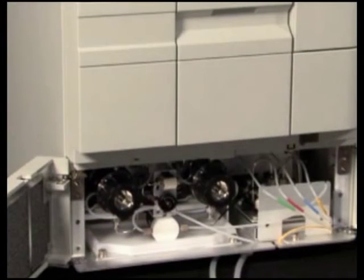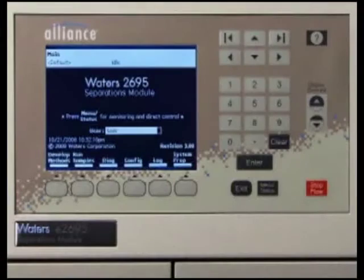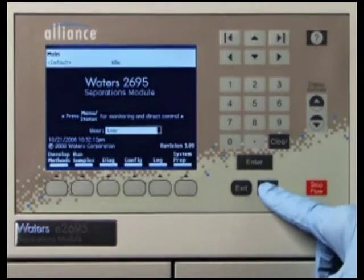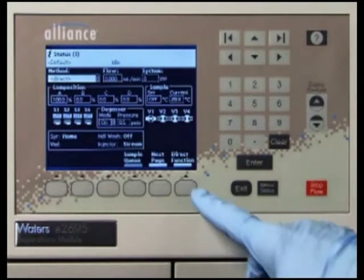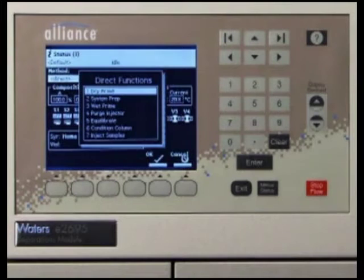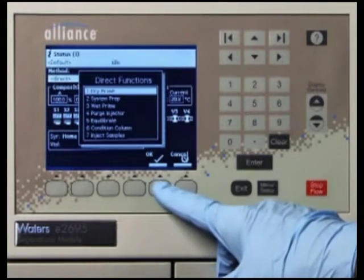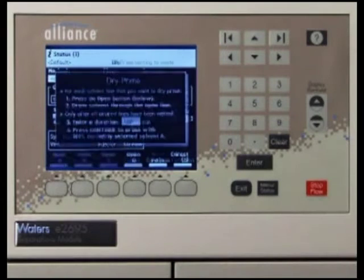To prime the solvent management system, you will need to perform a dry prime. Begin by pressing the menu status key to enter the status screen. Press the direct function screen key and the direct functions menu appears. Select Dry Prime, then press OK. The Dry Prime dialog box appears.